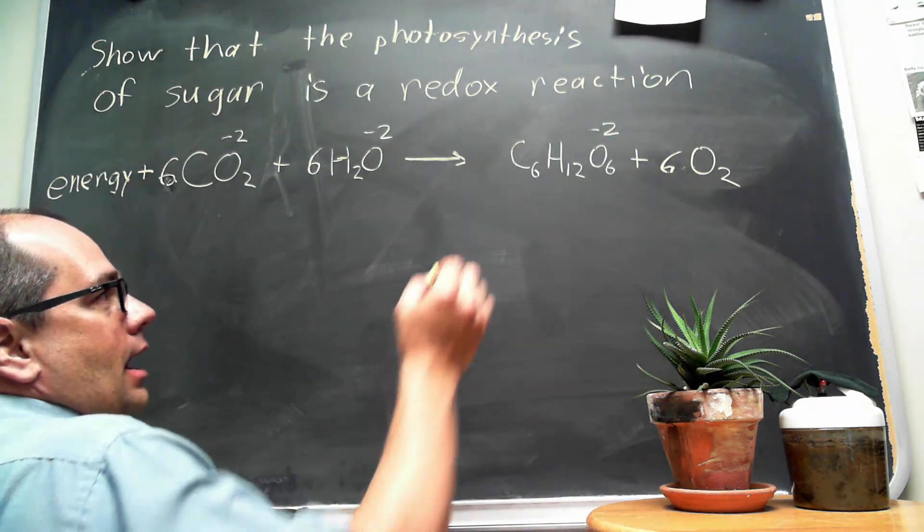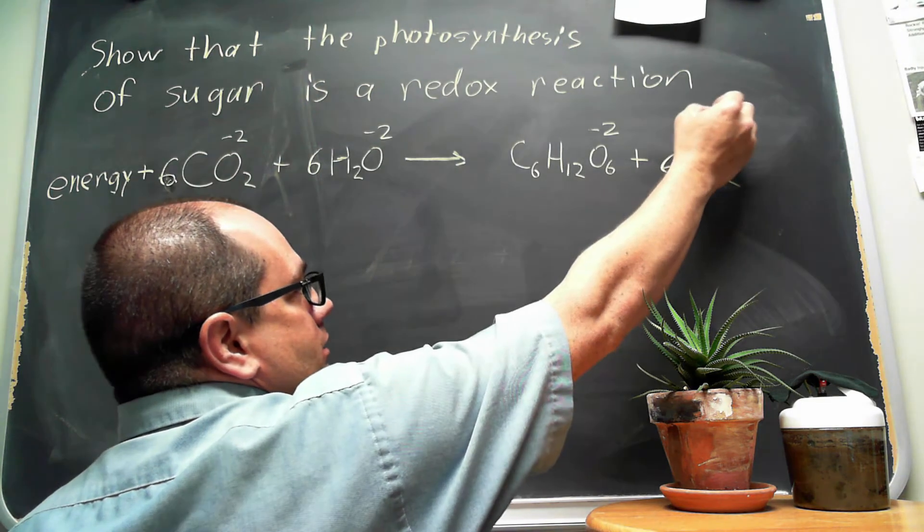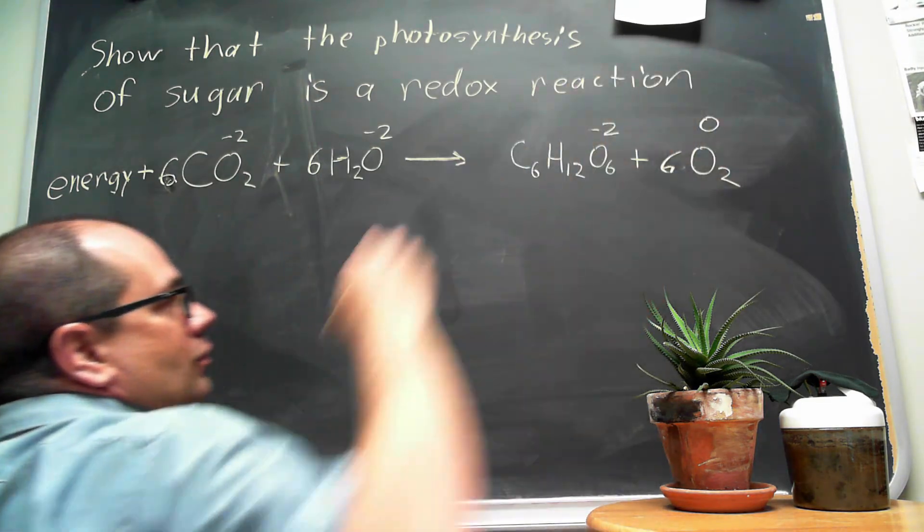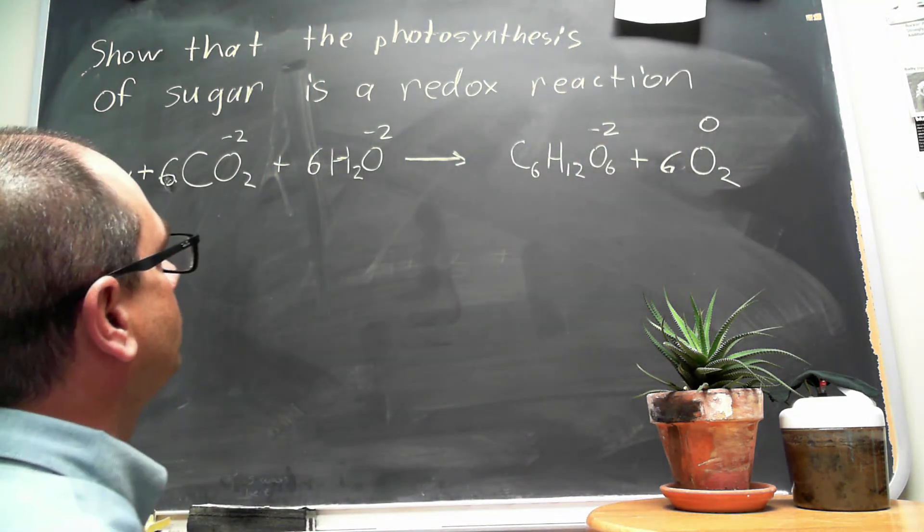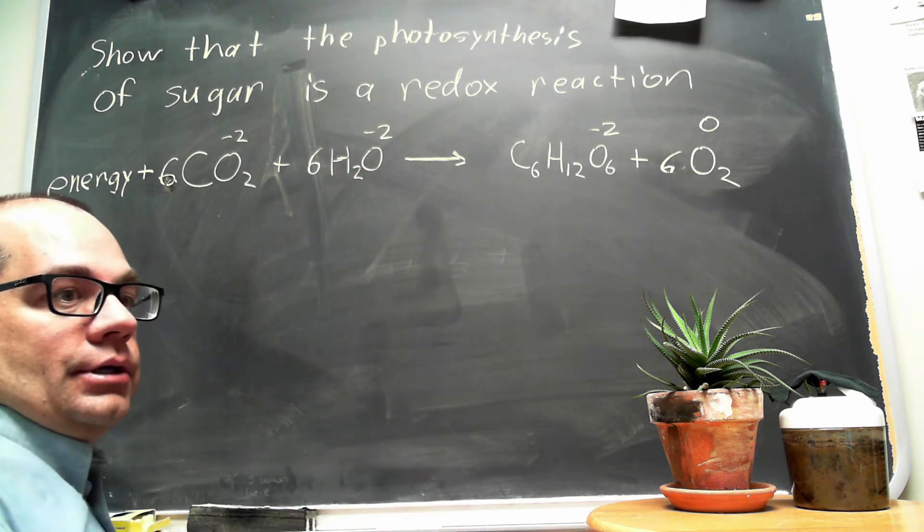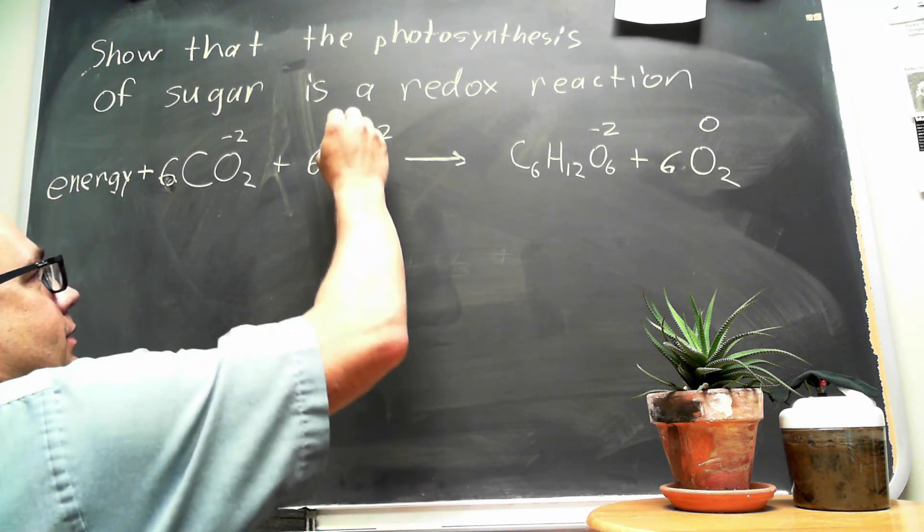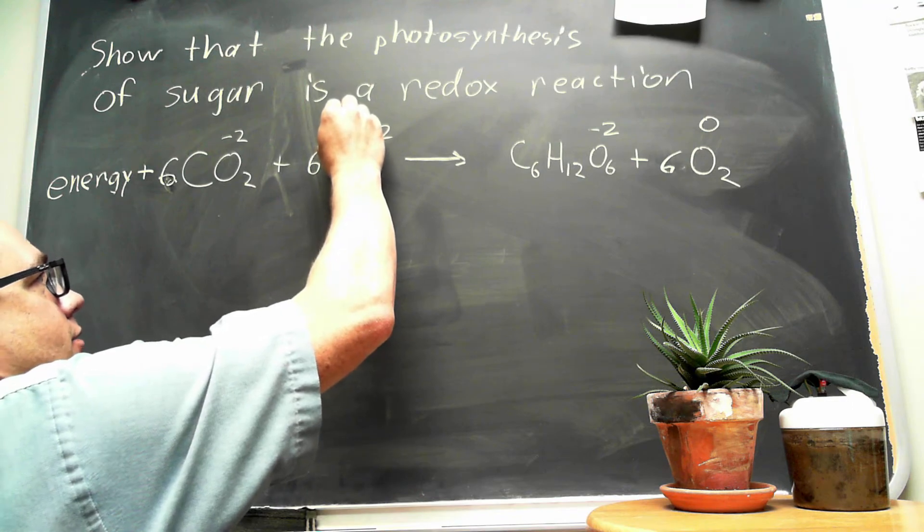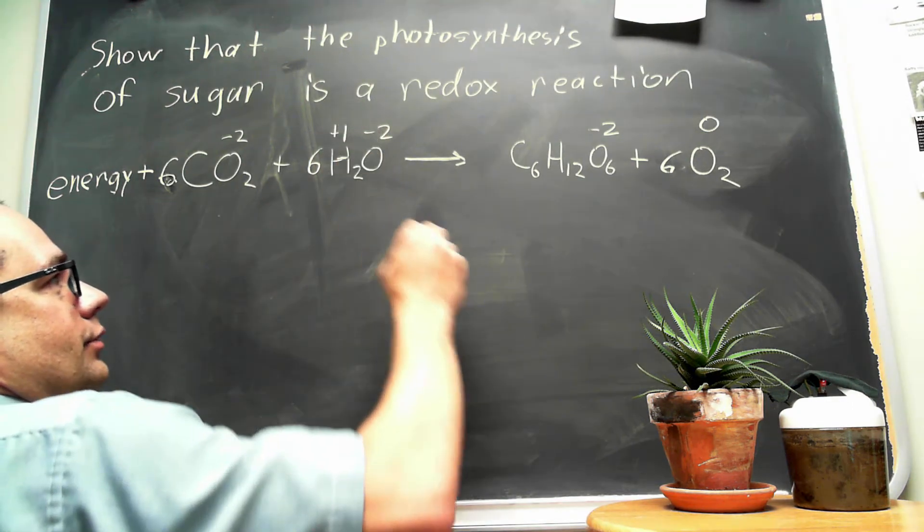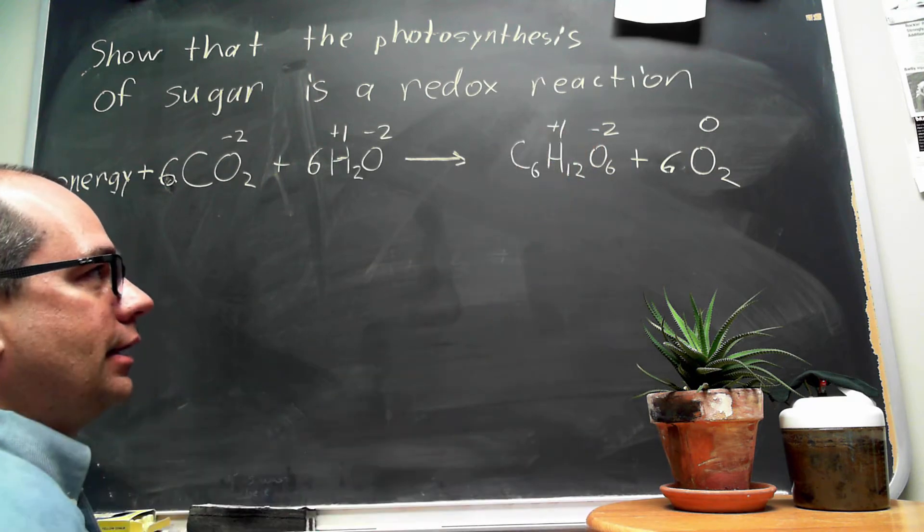In its elemental form, oxygen has an oxidation number of zero. Now, for hydrogen in compounds, it typically has oxidation numbers of plus one. So a plus one here and a plus one here.